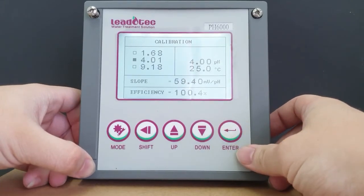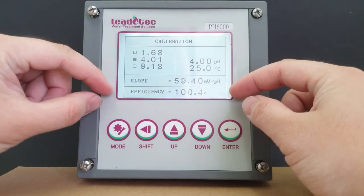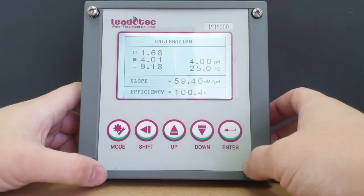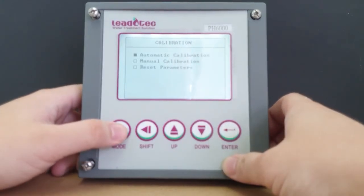And now we have it. The calibration will show you the slope as well as the efficiency of the sensor. Remember to press enter to save and press mode to exit.